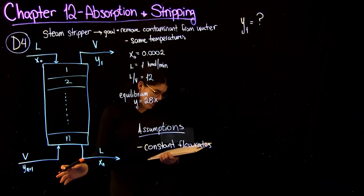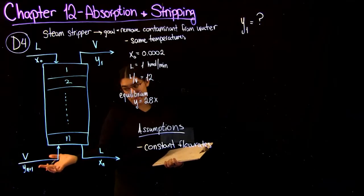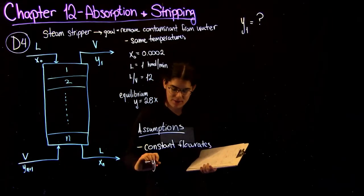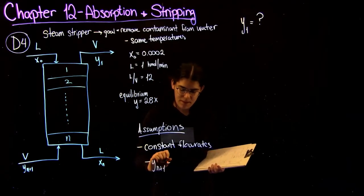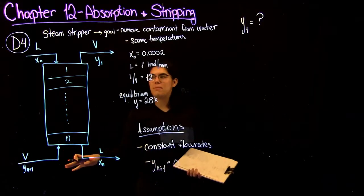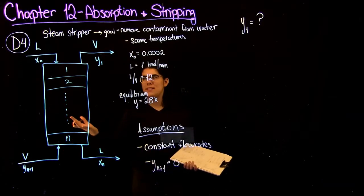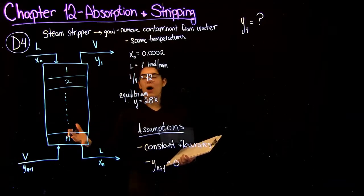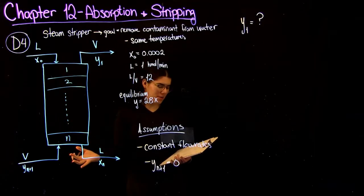Another assumption we're going to make is that the entering steam or vapor coming in is pure, or that yn plus 1 is equal to 0. Just because that wasn't particularly specified anywhere, but it's a safe assumption to make because we know it is a steam stripper. So we can assume, or we would like the steam coming in to be pure.